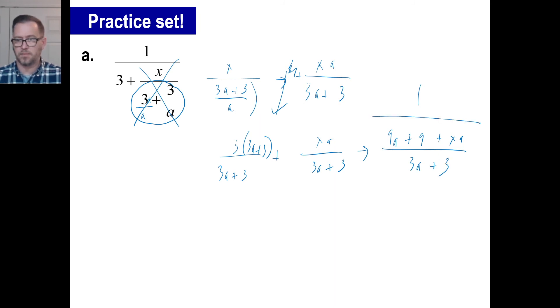And all that is going to be divided by 1. Well, anytime you divide 1 by a fraction, you're just going to reverse it. So you don't need to think too much. 1 times the reciprocal of this will be your answer. So you're going to have 3A plus 3 over 9A plus 9 plus xA. And there we go. Okay. All right. Pause and try B.